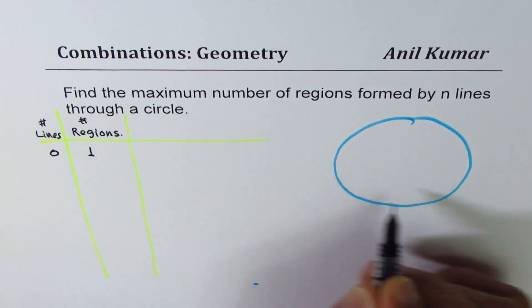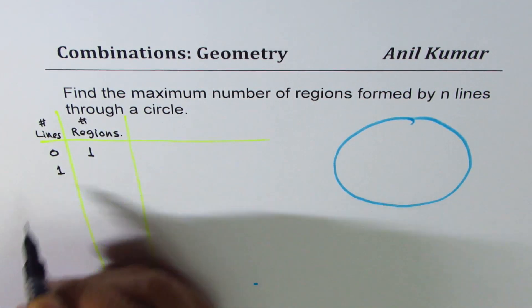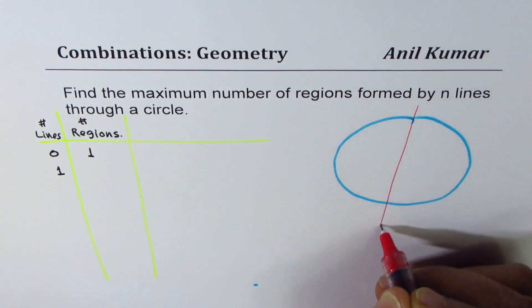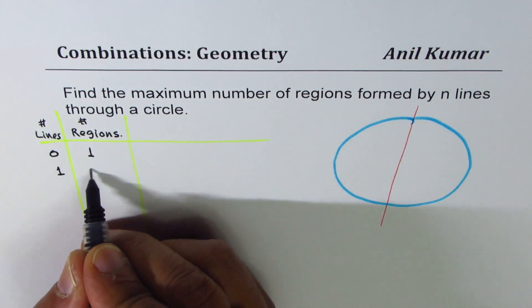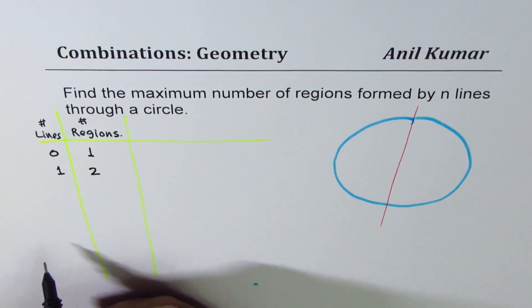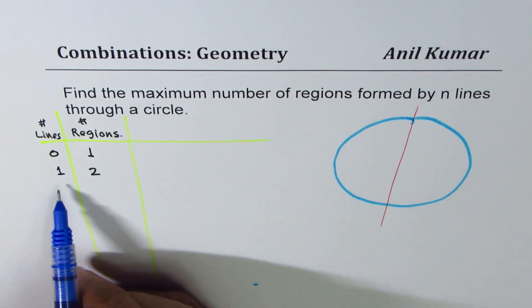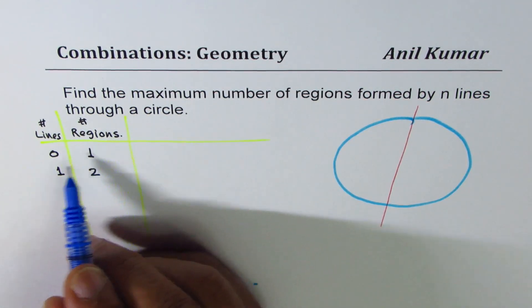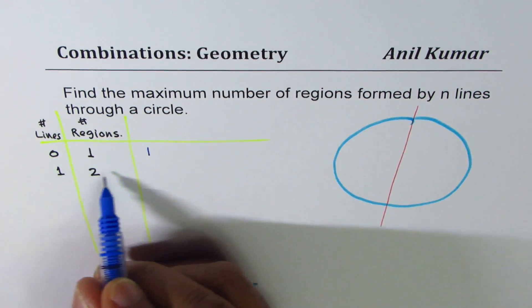This plane is one region. However, if I draw one line somewhere, we have two regions. Let's rewrite these regions in a different way so that we can get a relation between the number of lines and the regions formed. With no line at all we have one region; as soon as we draw one line we get two — that means one was already there and we added one more.